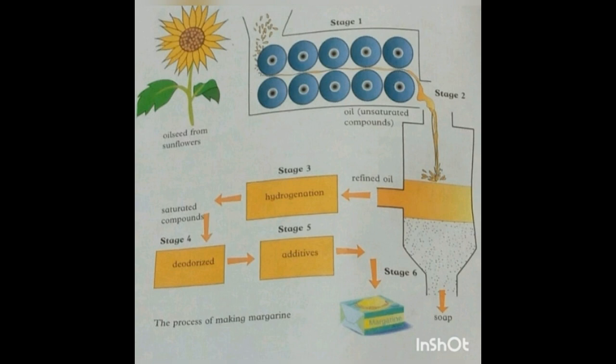Stage four is called deodorization. In stage five, different additives are used — such as colors, flavors, salt, and vitamins. After adding these additives, the margarine is completely formed and then packaged. This topic covered the process of making margarine from plant seeds.